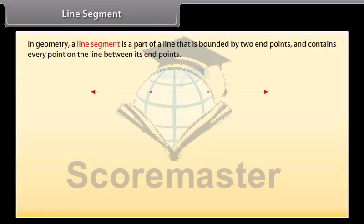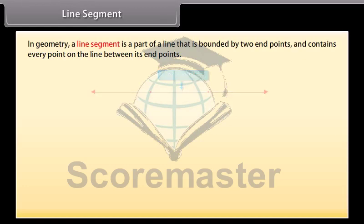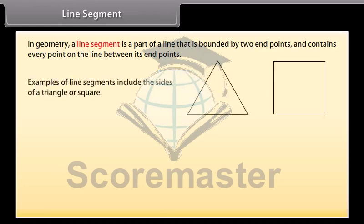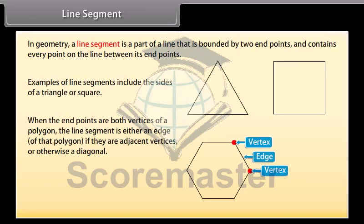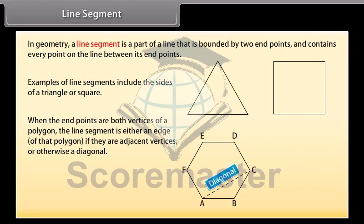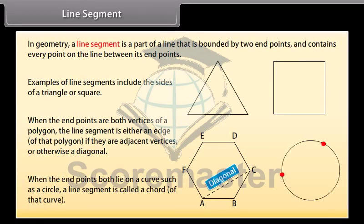In geometry, a line segment is a part of a line that is bounded by two end points and contains every point on the line between its end points. Examples of line segments include the sides of a triangle or a square. More generally, when the end points are both vertices of a polygon, the line segment is either an edge of that polygon if they are adjacent vertices, or otherwise a diagonal. When the end points both lie on a curve such as a circle, a line segment is called a chord of that curve.